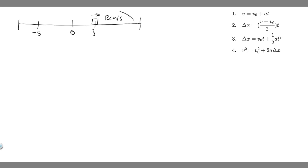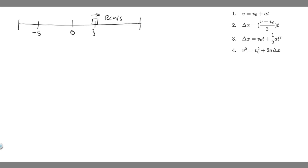I went ahead and drew what was going on here. So we have this object — I drew a box, it can be anything — and we have this number line. We know at 3 centimeters, in the positive direction, it's going to be traveling 12 centimeters per second to the right. And then 2 seconds later, we know the object is going to be here at minus 5. We don't know how fast it's going to be traveling there, but we know that in 2 seconds it ends up there.